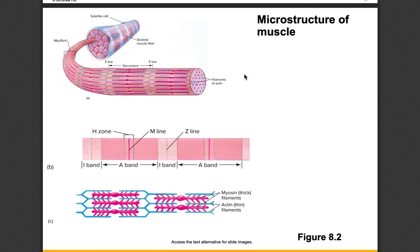Looking at the myofibrils and sarcomeres: inside skeletal muscle you can see multiple nuclei, multiple myofibrils, and inside those bundles are the thick filament myosin shown as pink and the thin filament actin shown as blue. These are grouped into sectioned-off areas called sarcomeres. A sarcomere runs from Z line to Z line — Z lines are the dividing walls that separate one sarcomere from another. They are attachment points for actin and don't really move.